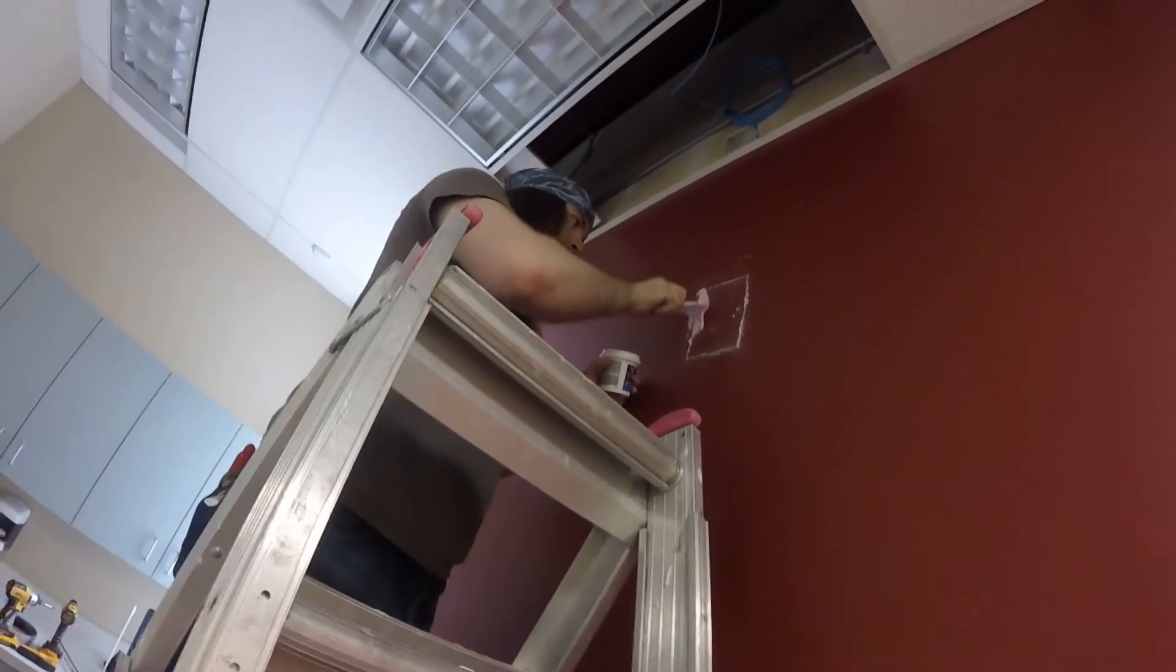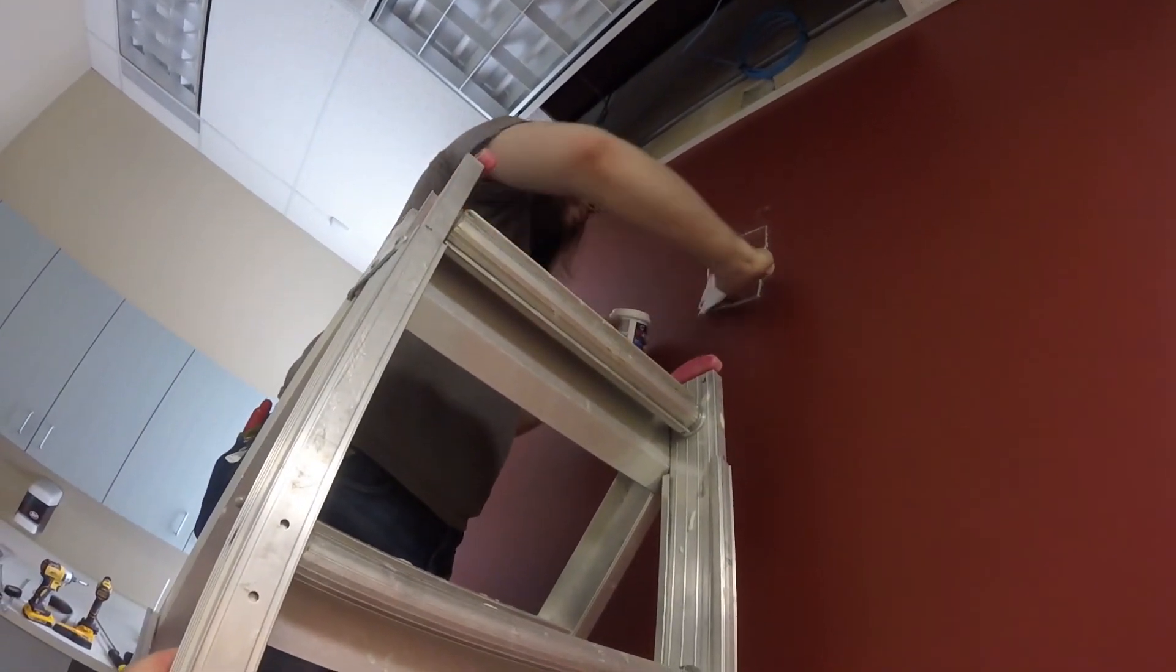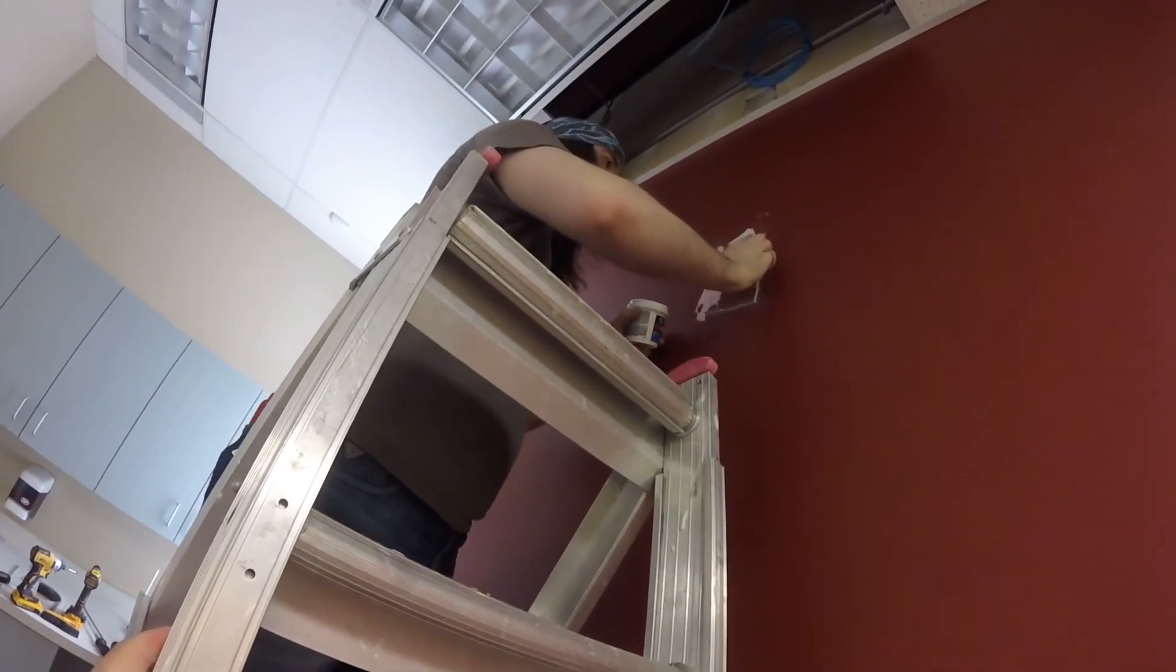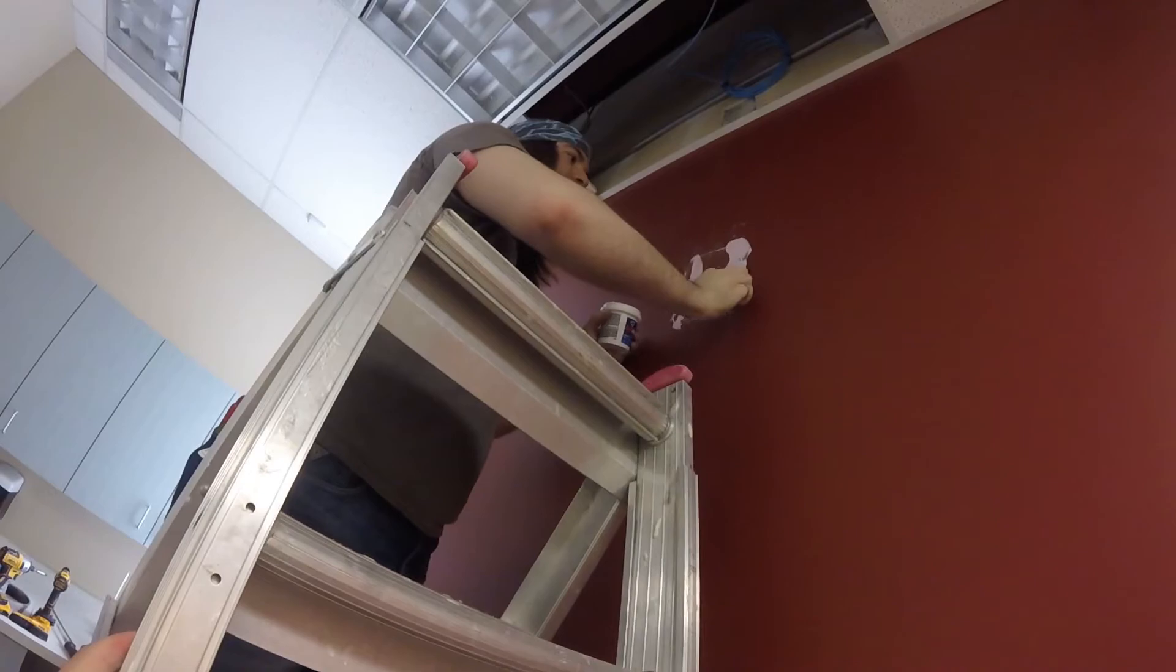Now this stuff goes on pink, dries as white, and then you can use it to plaster. There's primer that does that too, so we're painting a white wall.